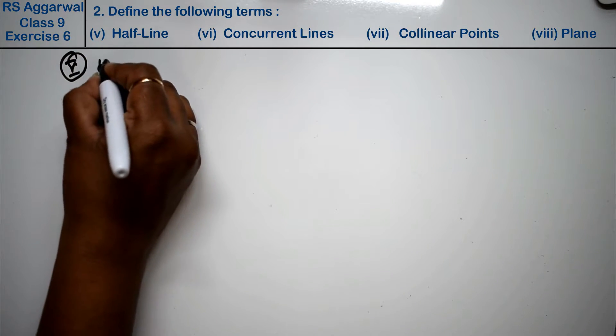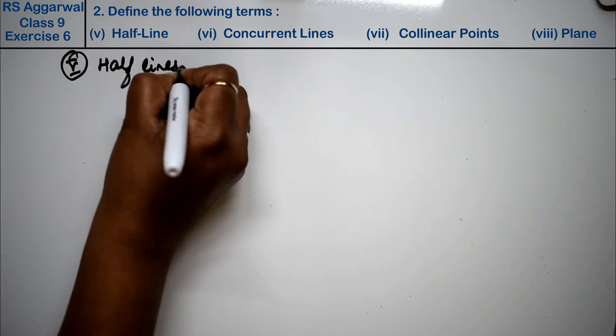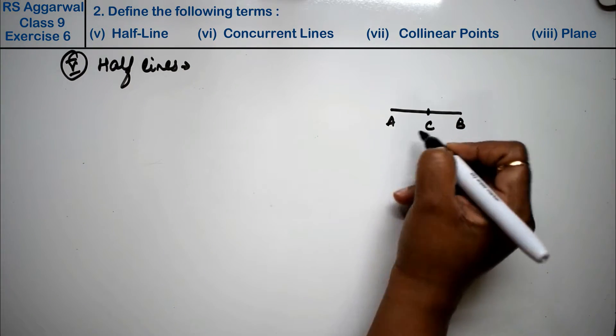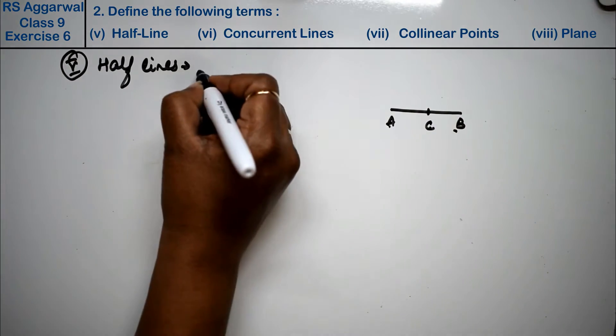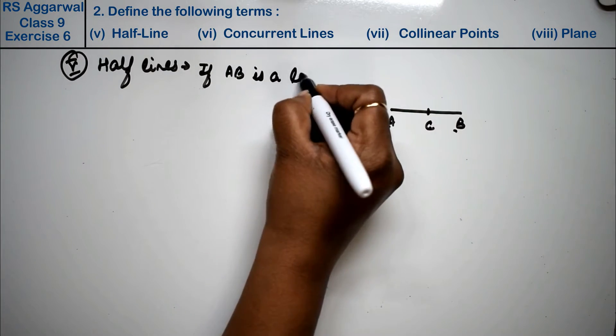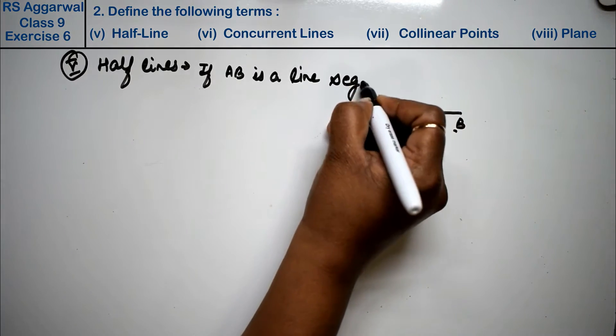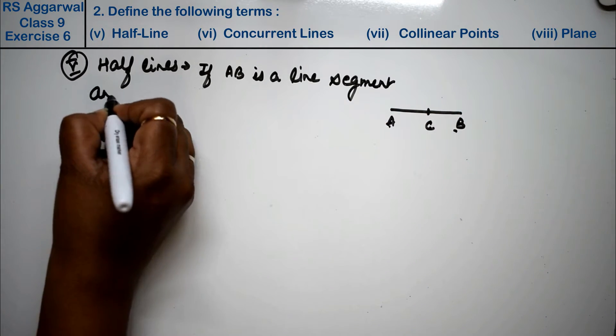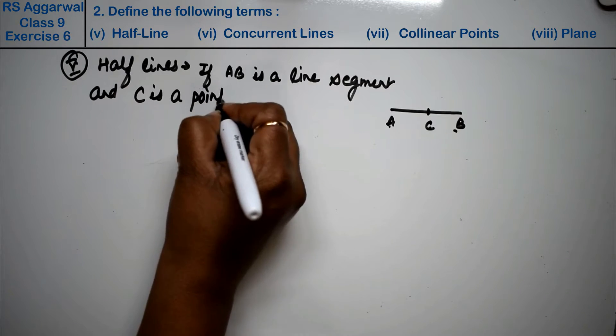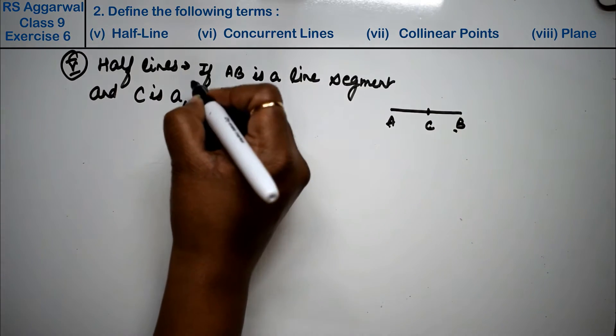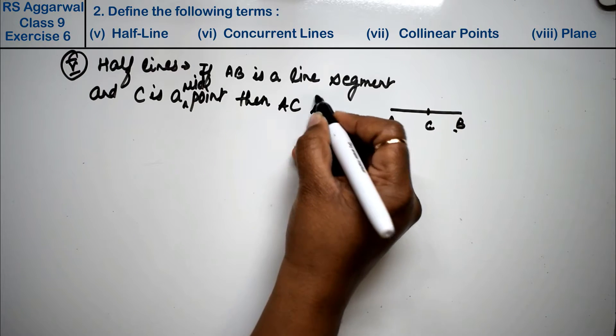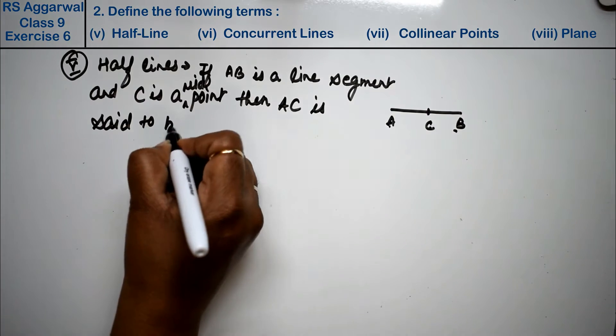Let's do fifth part. Fifth part is half lines. Half lines kya hoti hain? AB ek line hai jiska C ek point hai, toh AC kya hogi, half line hogi AB ki. If AB is a line segment and C is a midpoint, a line segment having a point in between, C is a midpoint, then AC is said to be half line.